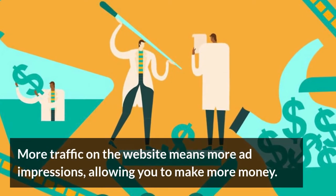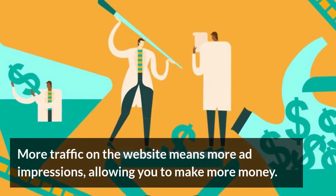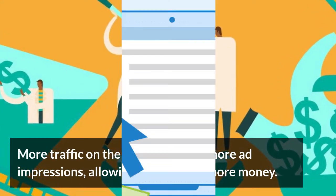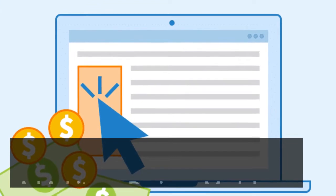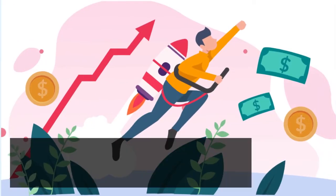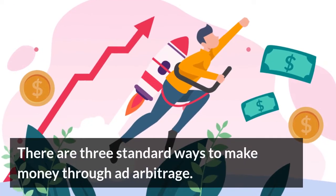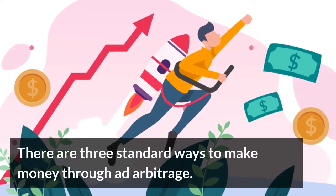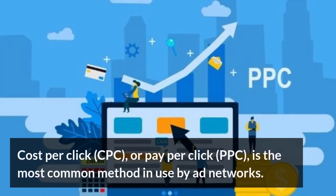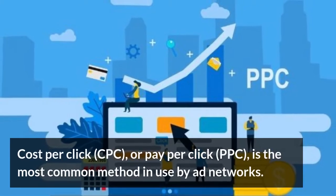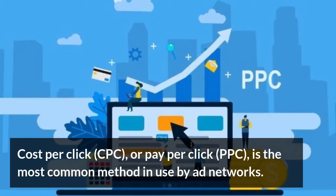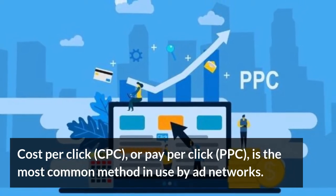More traffic on the website means more ad impressions, allowing you to make more money. There are three standard ways to make money through ad arbitrage. Cost per click, CPC, or pay per click, PPC, is the most common method in use by ad networks.